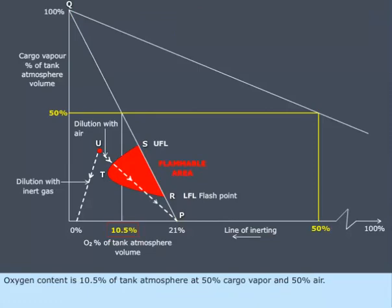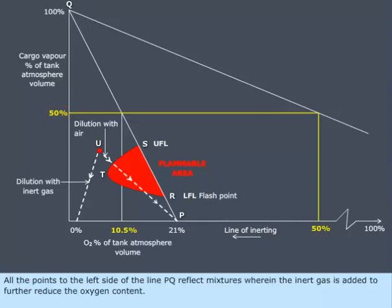Oxygen content is 10.5% of tank atmosphere at 50% cargo vapor and 50% air. All the points to the left side of the line PQ reflect mixtures wherein the inert gas is added to further reduce the oxygen content.